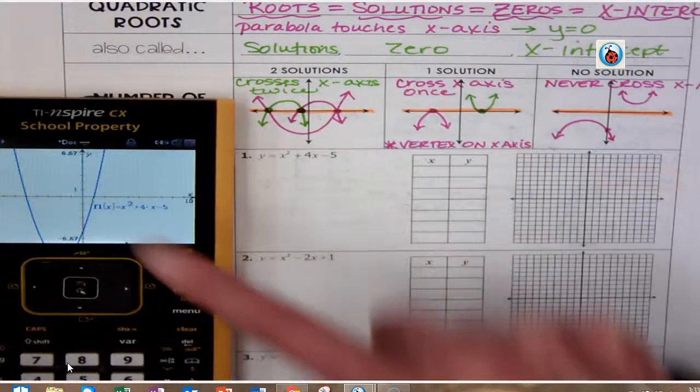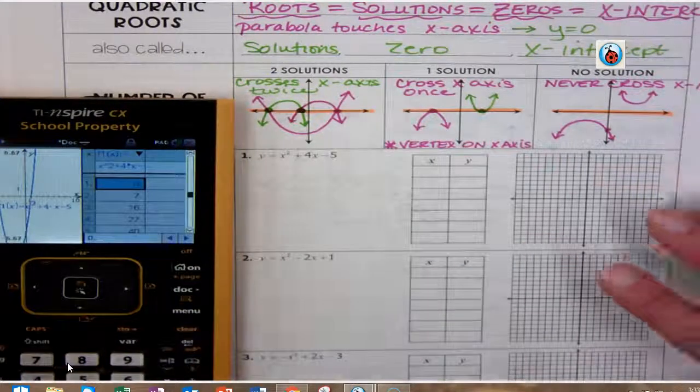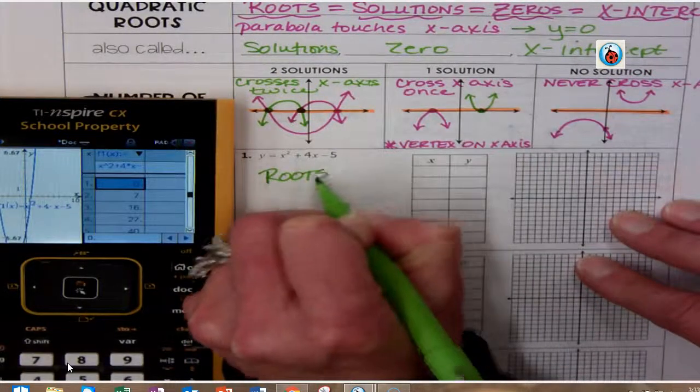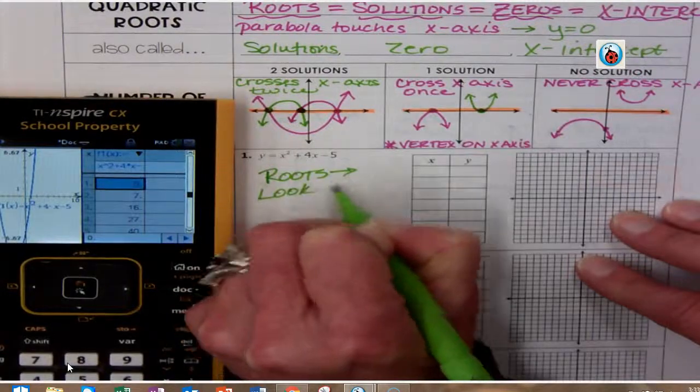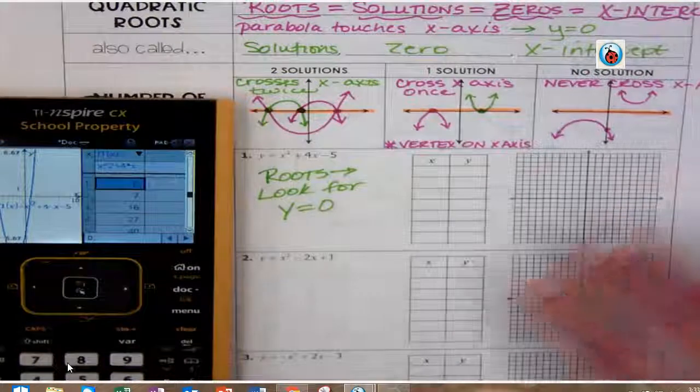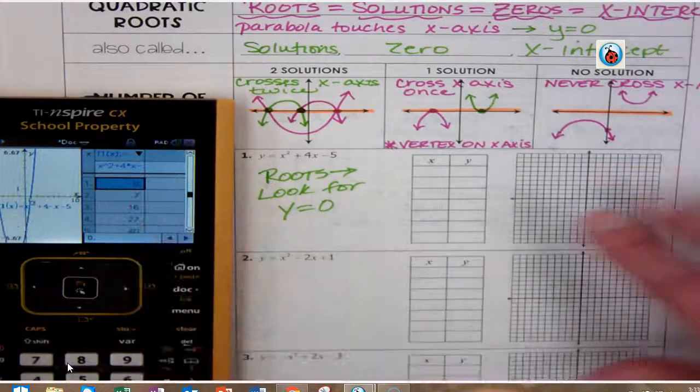And I can go to my table. And then when I go to my table to find roots, look for y equal to zero. And I'm going to see one is right here—there's my y equals zero where x is at 1.